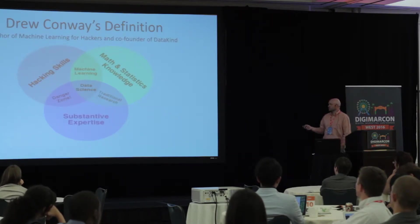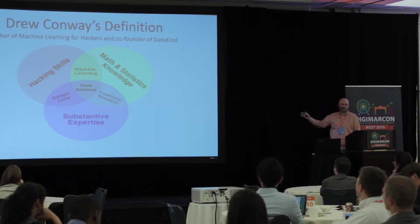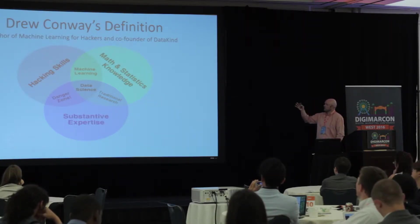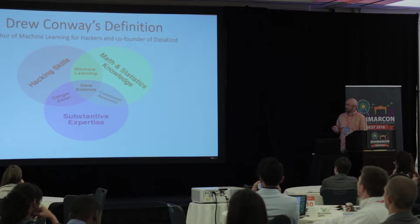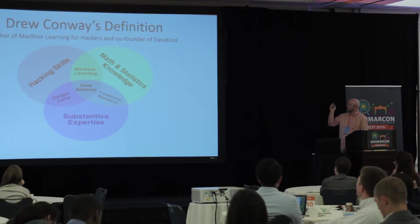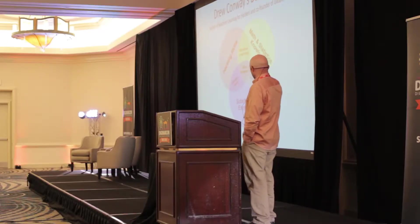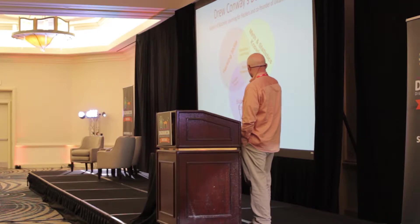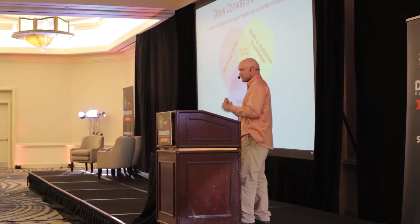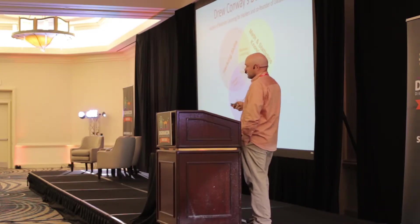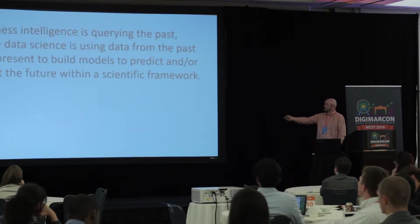Here's another definition that is widely used in presentations about data science. A man named Drew Conway, author of a book called Machine Learning for Hackers and co-founder of a company called DataKind, came up with a visual definition that basically says a data scientist has hacking skills, substantive experience, and math and statistics knowledge — and if you have all those things together, you have the skill set to be a data scientist. Still not really clear in my opinion exactly what a data scientist is or what they do.